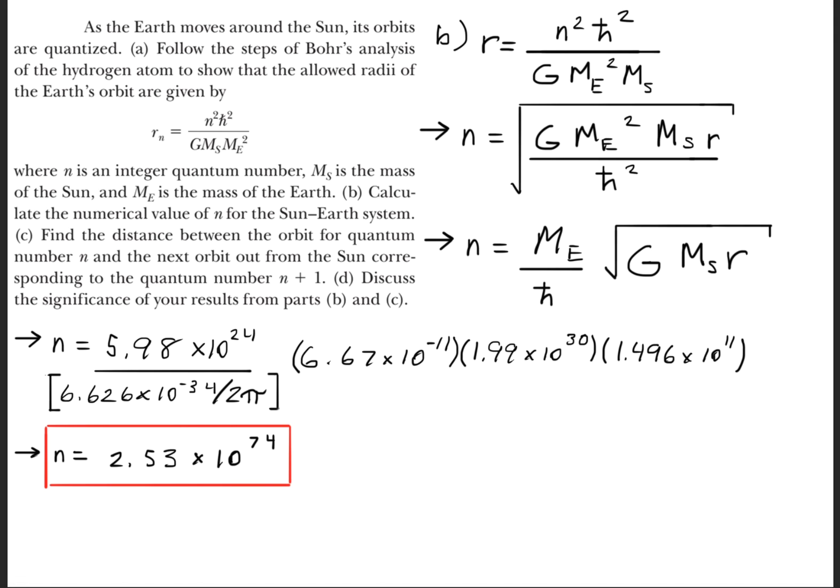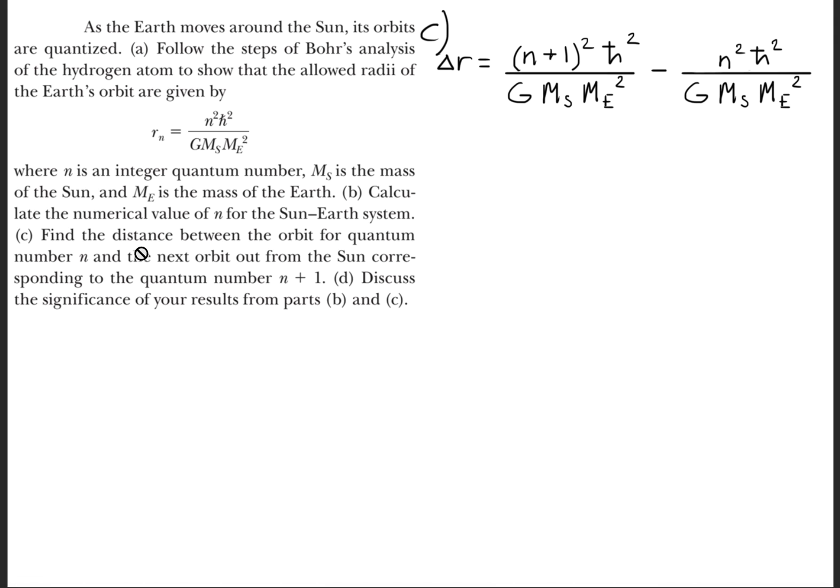You punch that all into the calculator, and you'll get an n value of 2.53 times 10^74. Part C is asking to find the distance between the orbit for quantum number n and the next orbit out from the Sun corresponding to quantum number n+1.